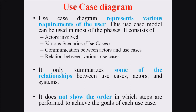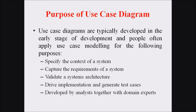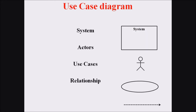The basic symbols used in use case diagrams include: a system, which is represented by a rectangle with a system name; actors, which are represented by an actor symbol; use cases, represented within an ellipse or circle; and finally the relationship, shown with an arrow line.